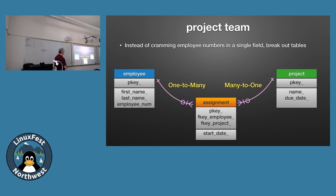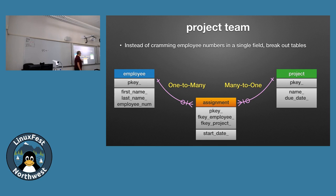Earlier we had an example of cramming employee numbers together into a single field, and I said that was the wrong way. The right way is a third bridge table. A project can have multiple employees, and each employee can be assigned to multiple projects — that's many-to-many. We create an assignment or project-assignment table with two foreign key columns linking back to the employee and to the project. We might also add a start_date field representing when that person's duties on that project begin. That's another example of having additional fields on the bridge table.